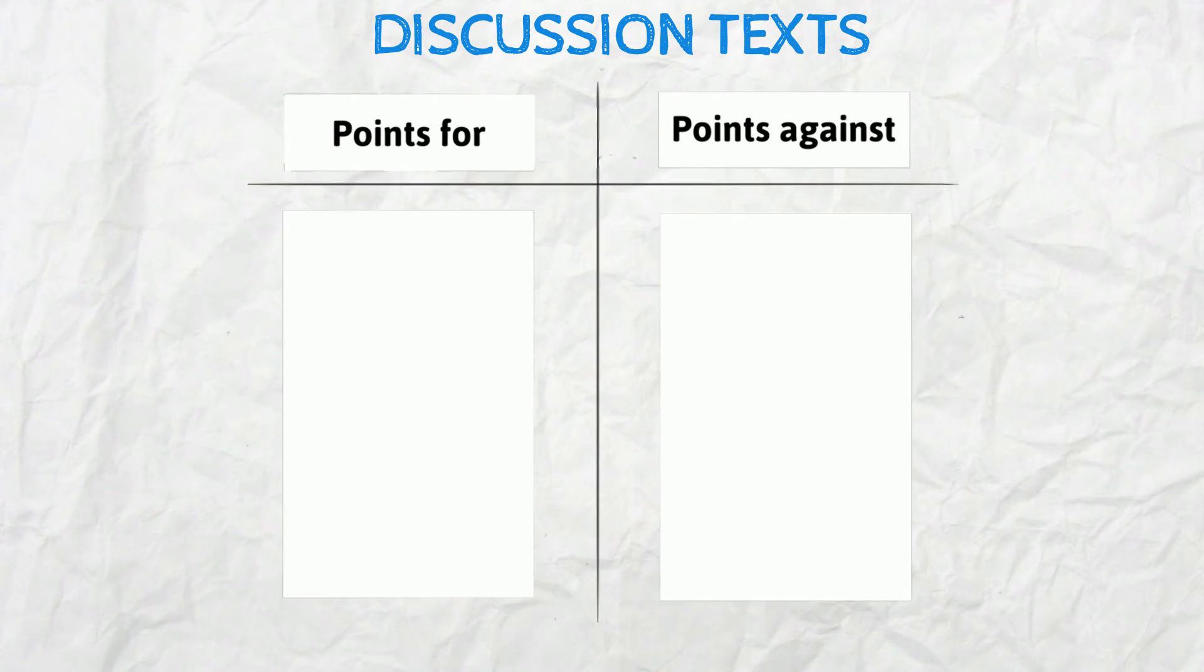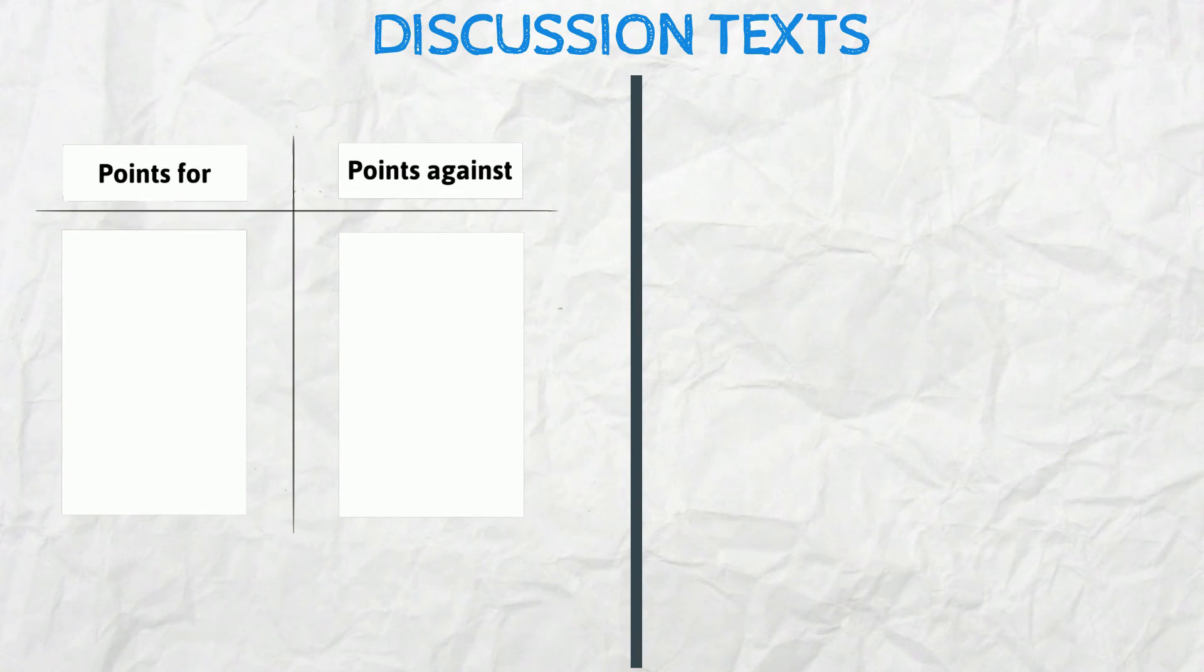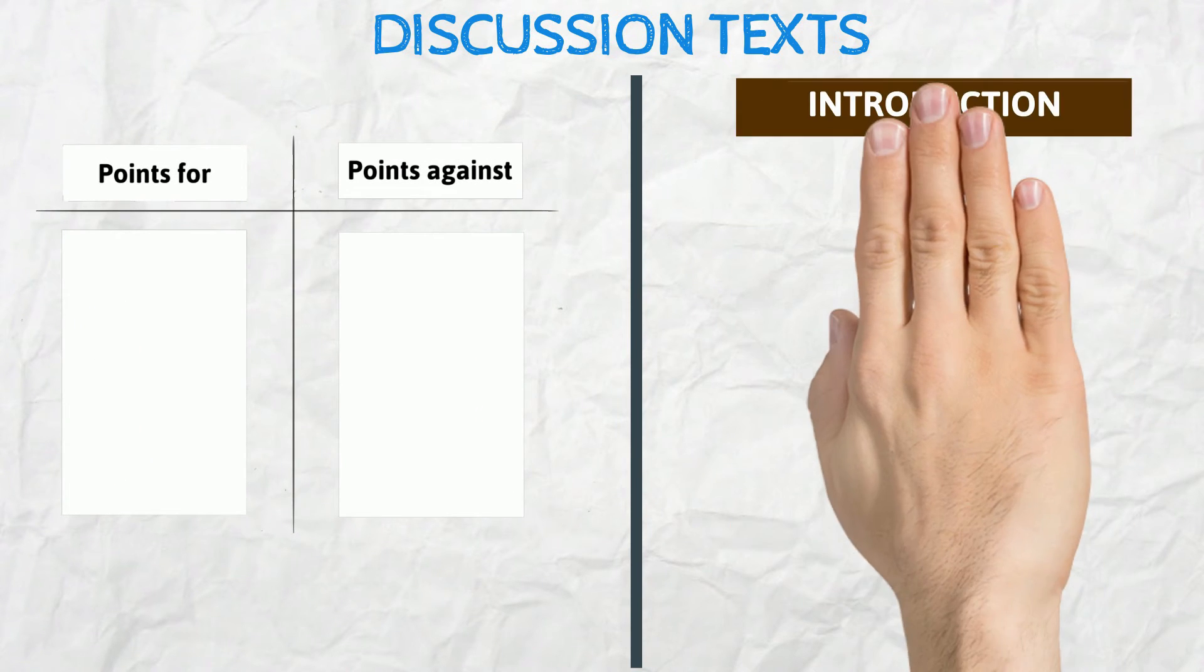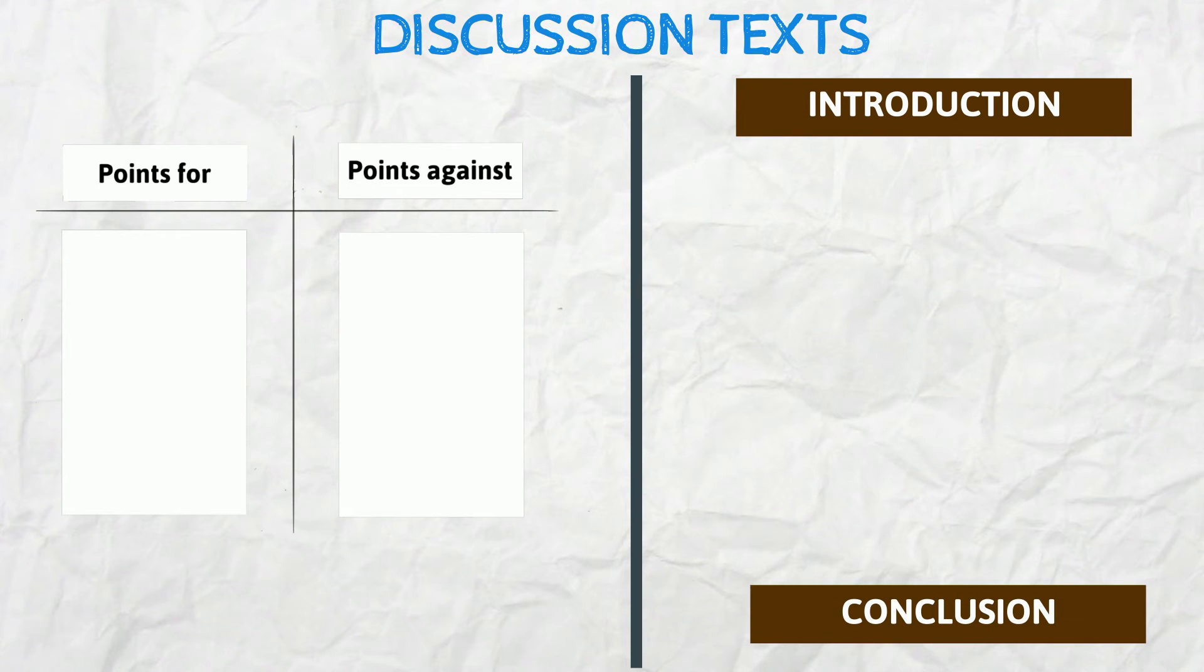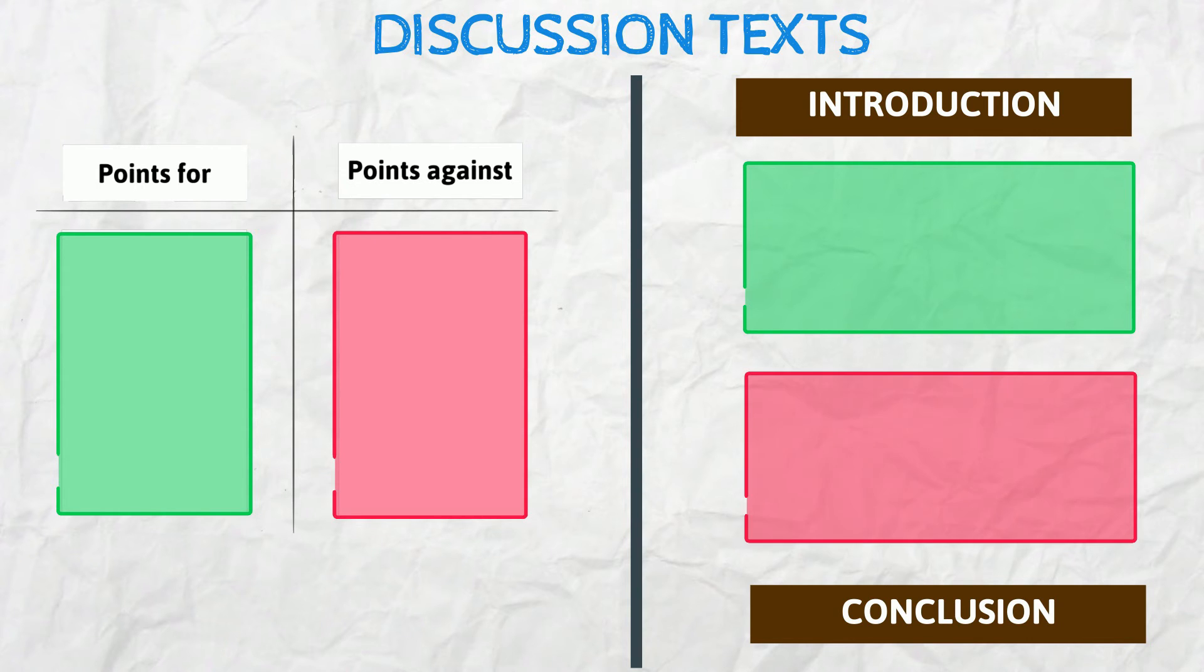When writing your discussion, once again, will begin and end with the introduction and conclusion. One paragraph will then be dedicated to one side of the discussion. In this case, the points for, and one paragraph will be devoted to the other side, points against in this example. Overall, this piece of writing will have four paragraphs.